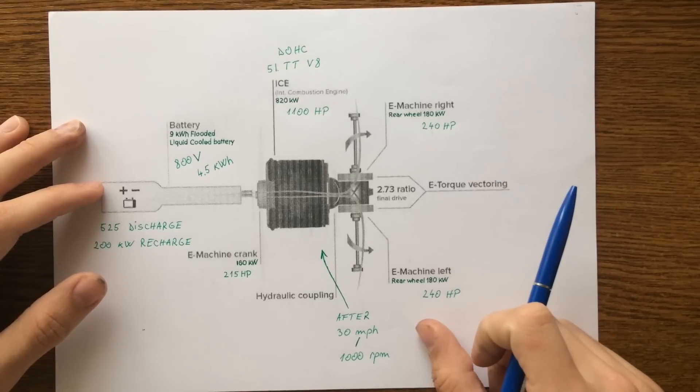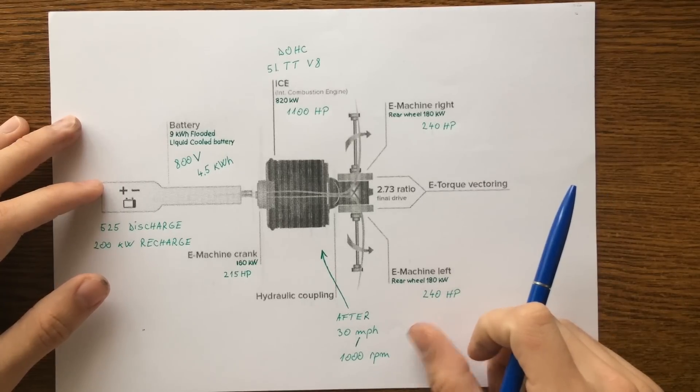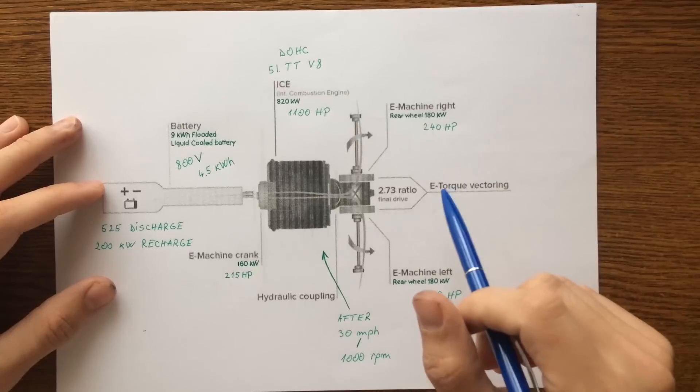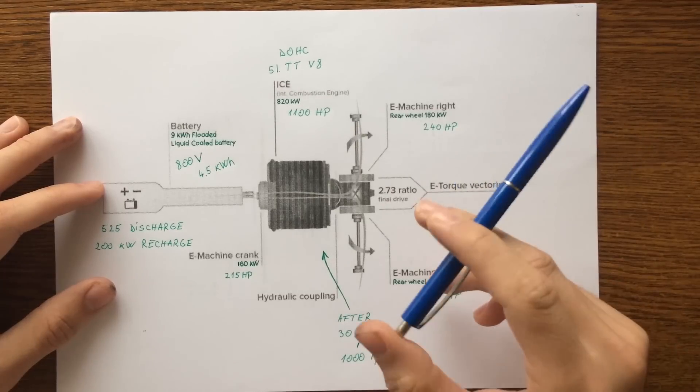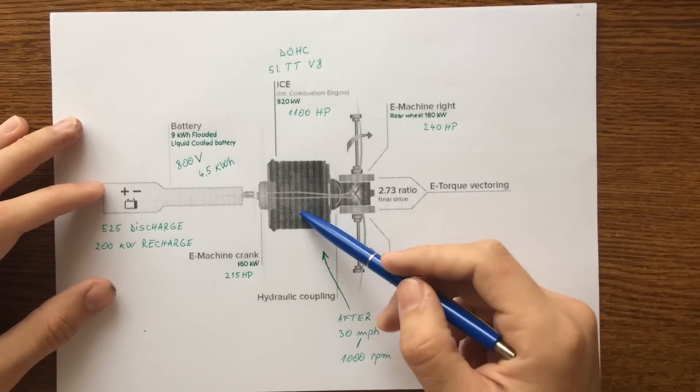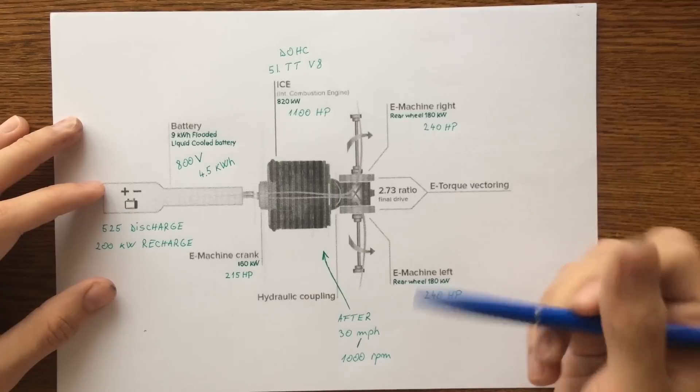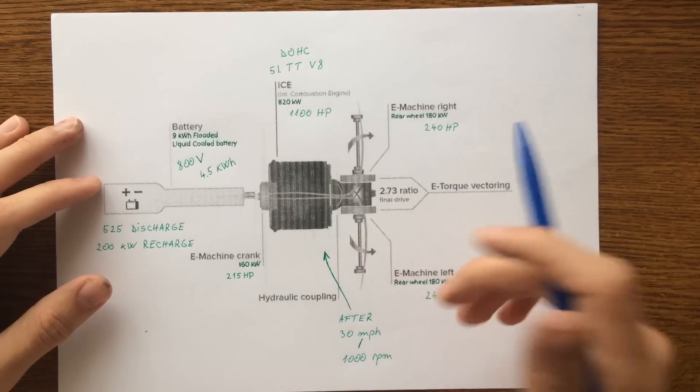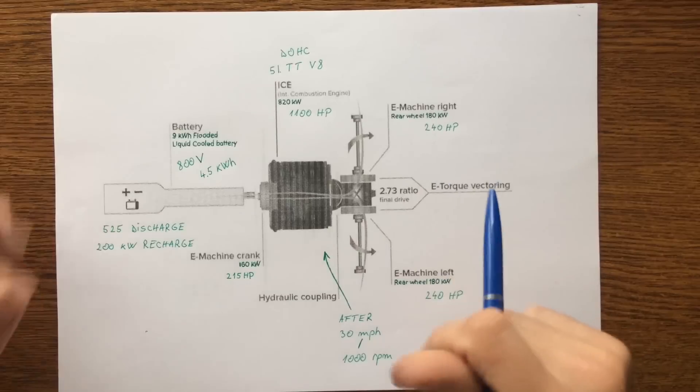So Koenigsegg has developed a clutch slip mechanism that uses this hydraulic coupling to convert torque at medium and high speeds during fast acceleration. So this allows the combustion engine to gain revs and power, giving the sensation of a traditional downshift even without the traditional gearbox.